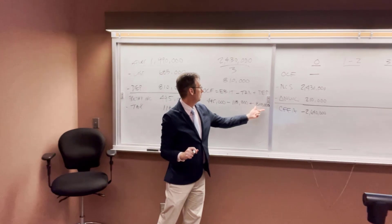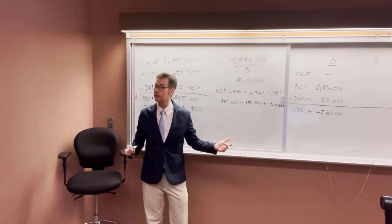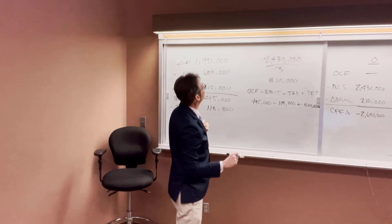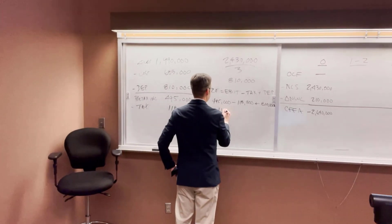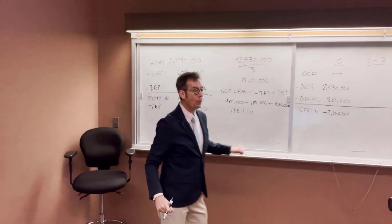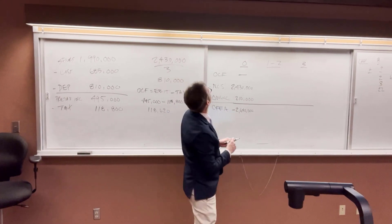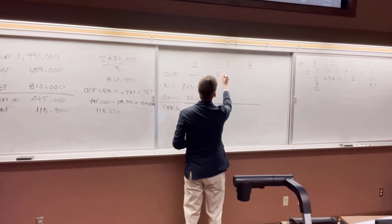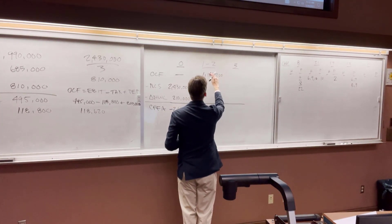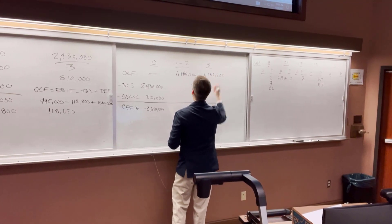Let's calculate: $495,000 minus $118,800 plus $810,000. Can someone tell me what that number is? Operating cash flow equals $1,186,200. That goes in the operating cash flow row of our chart. Net capital spending in years one and two is zero, and the change in net working capital in years one and two is also zero. So cash flow for years one and two is $1,186,200.